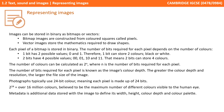Two bits have four possible values: 00, 01, 10, and 11. Therefore, two bits can store four colours. The number of colours can be calculated as 2 to the power of n, where n is the number of bits for each pixel. The number of bits for each pixel is known as the colour depth.